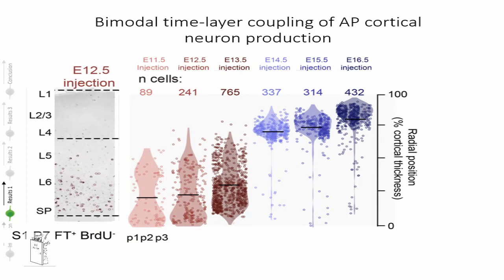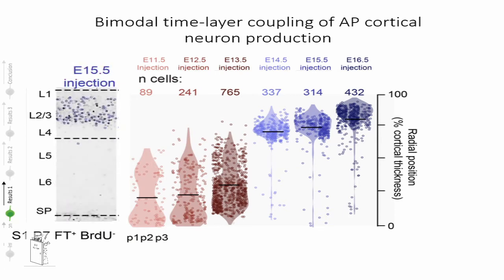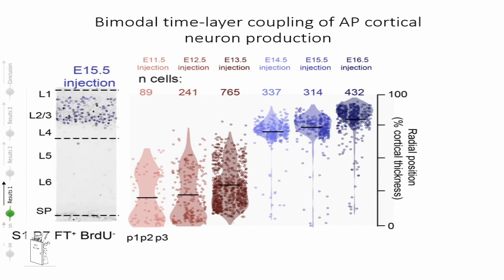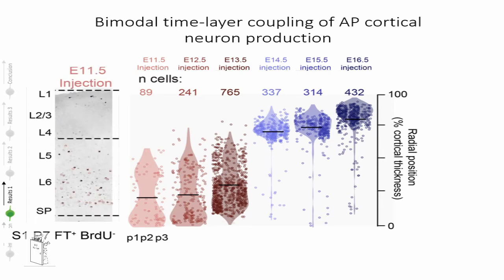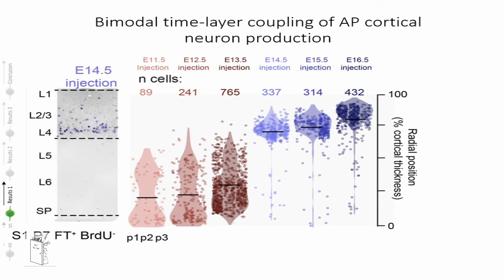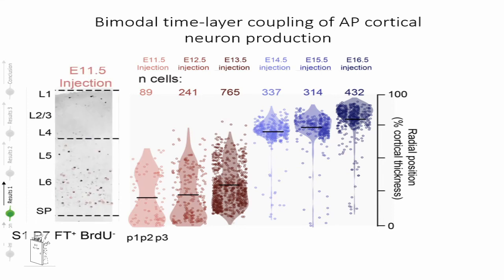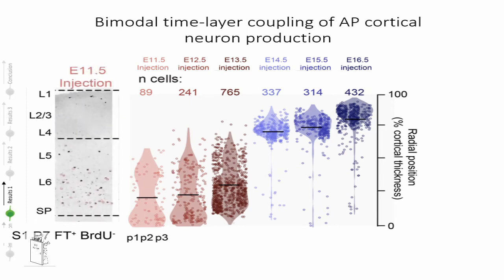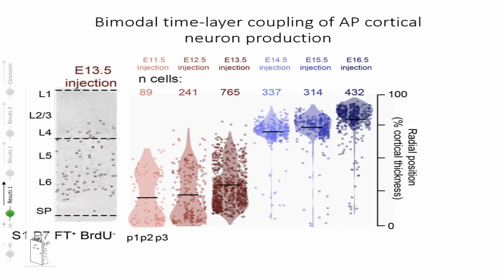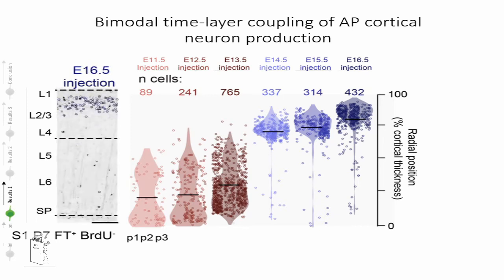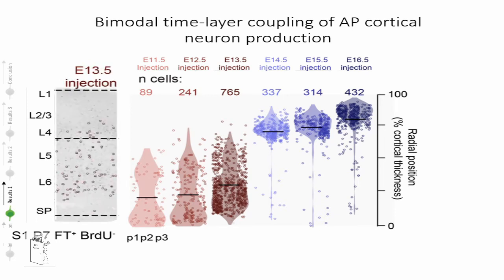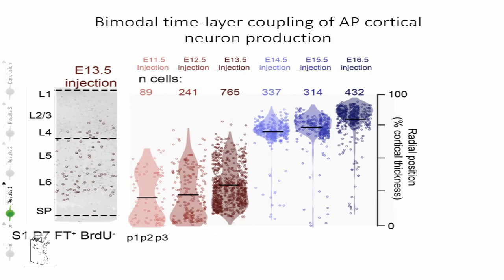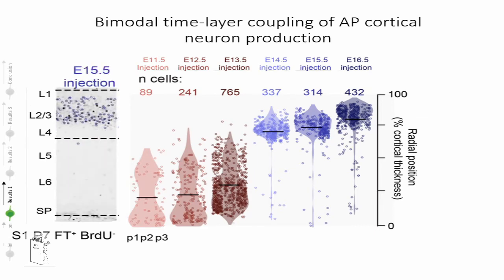By repeating this experiment at each neurogenic day during the development of the mouse neocortex, we were able to precisely identify how each neurogenic day contributes to the formation of specific layers of the neocortex. As expected, we could reproduce the typical inside-out pattern of corticogenesis, meaning that early neurogenic days contribute to deep layers and later days contribute to superficial layers. We also observed a great disparity in the variability of the laminar position produced during early versus late corticogenesis.